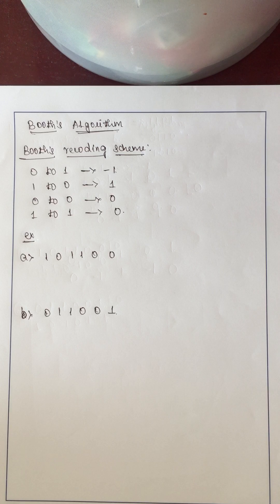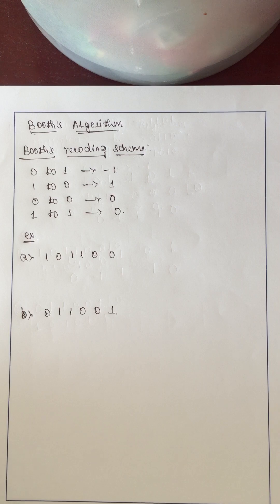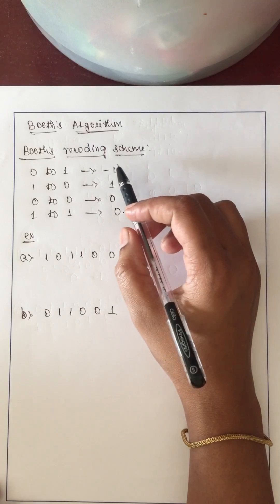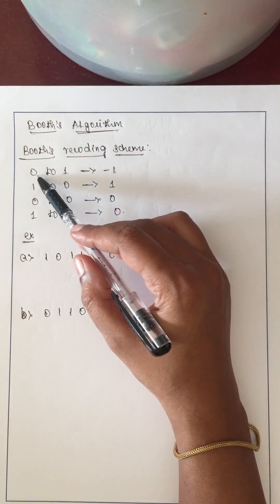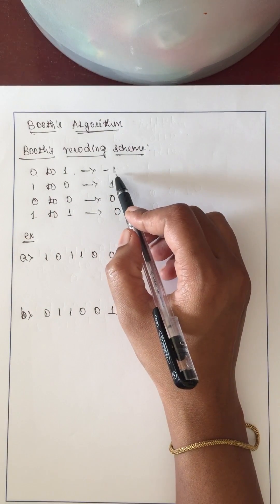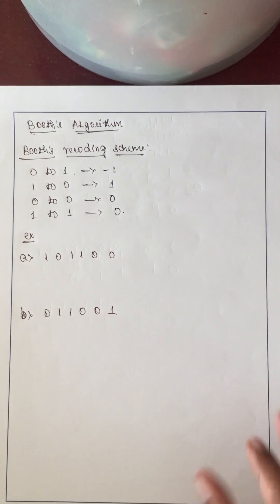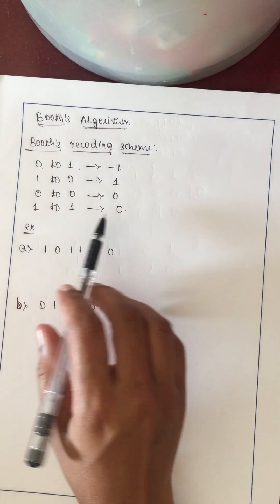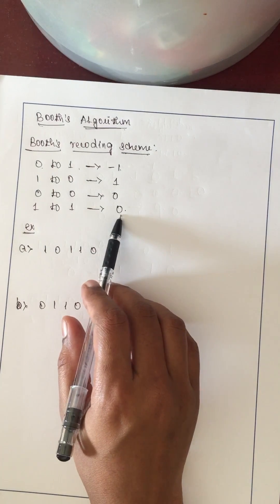In Booth's algorithm we apply a recoding scheme. We combine two adjacent bits and write the recoded value for those combined bits. The recoding rules are: combining 0 and 1 gives -1; combining 1 and 0 gives +1; combining 0 and 0 or 1 and 1 gives 0.